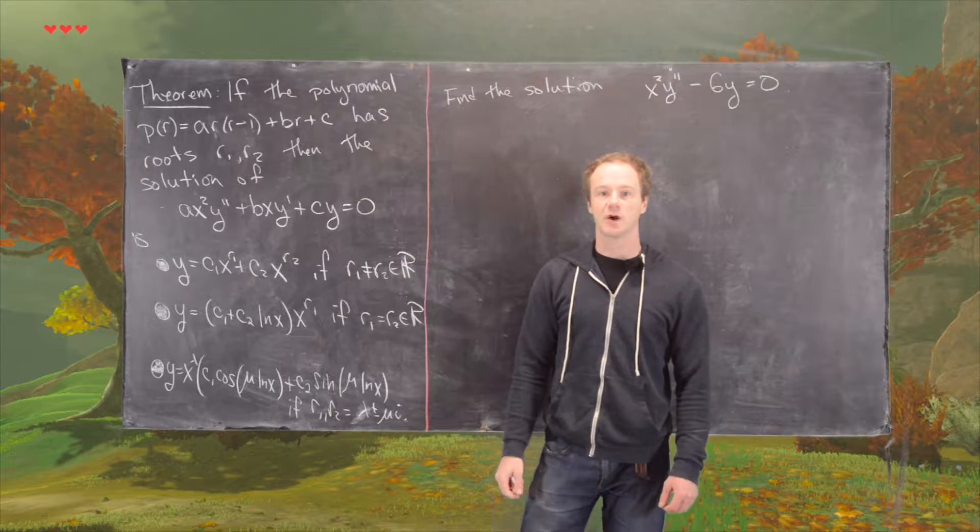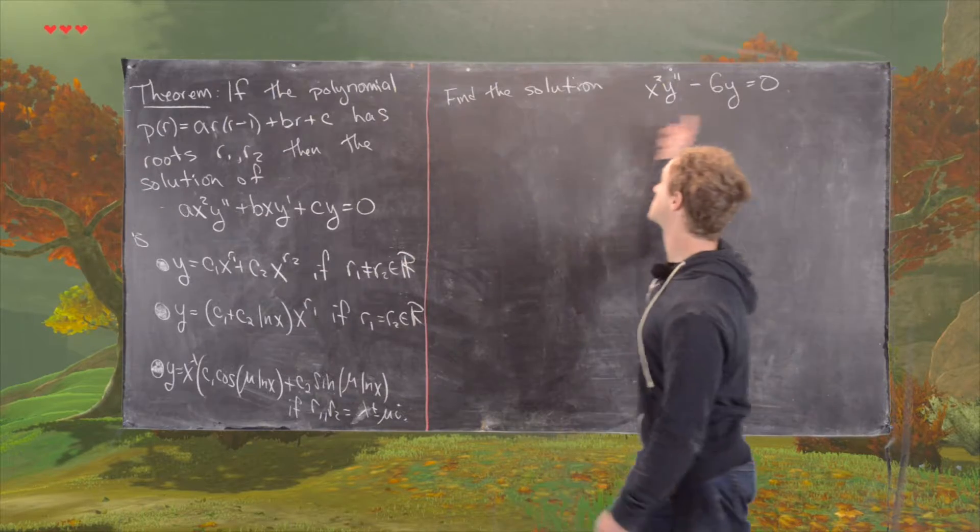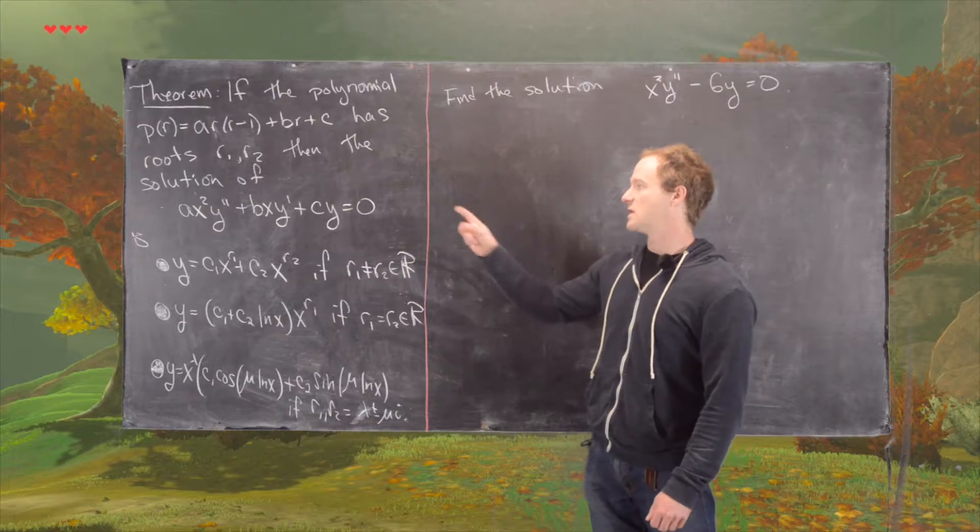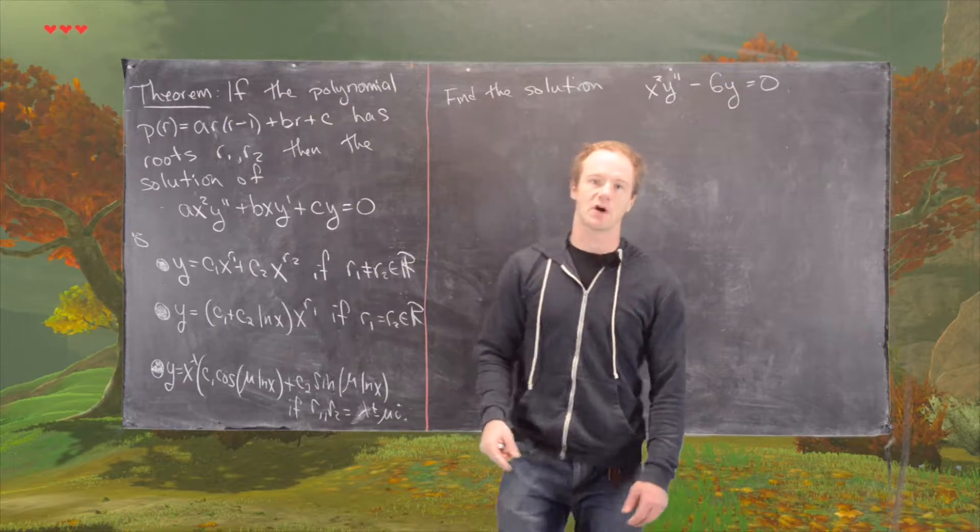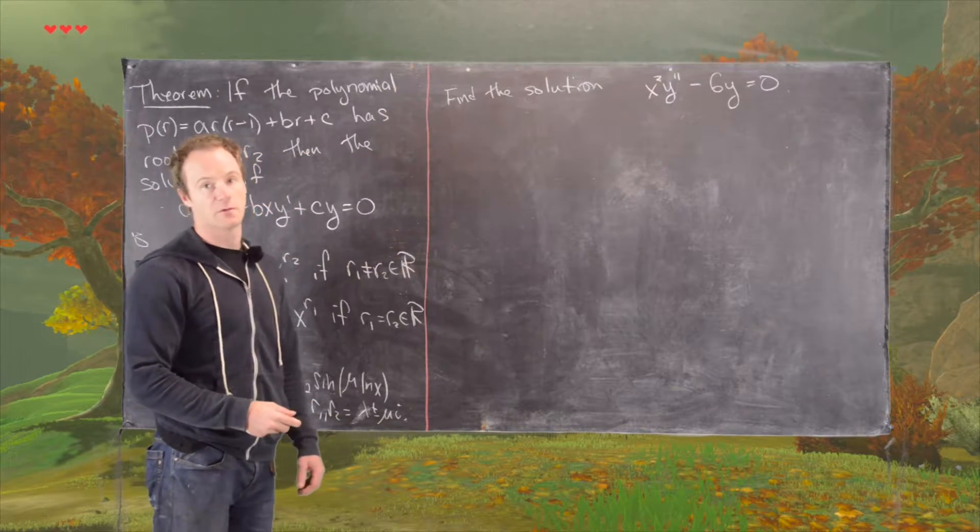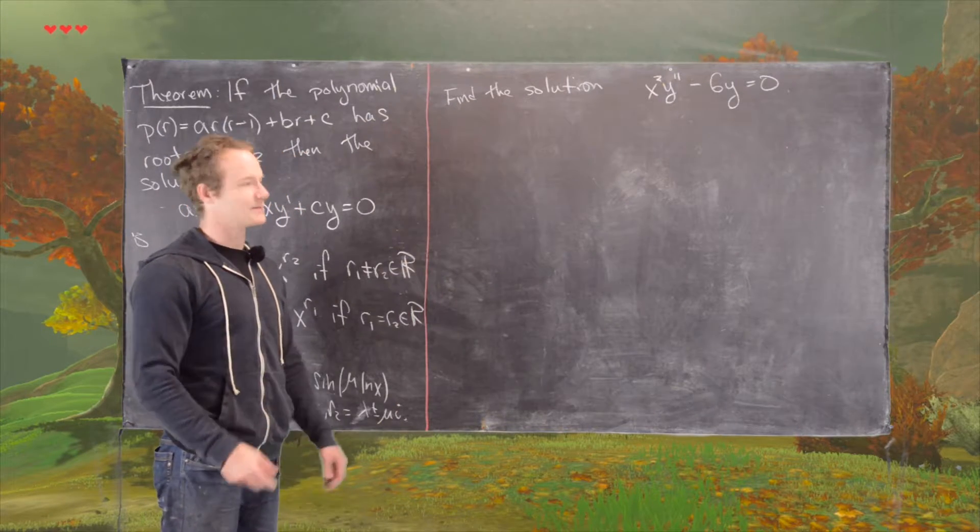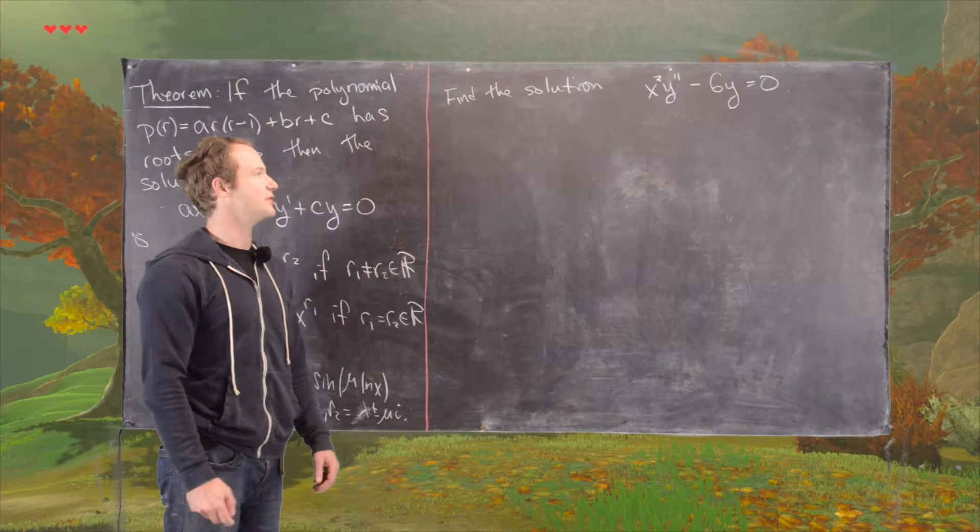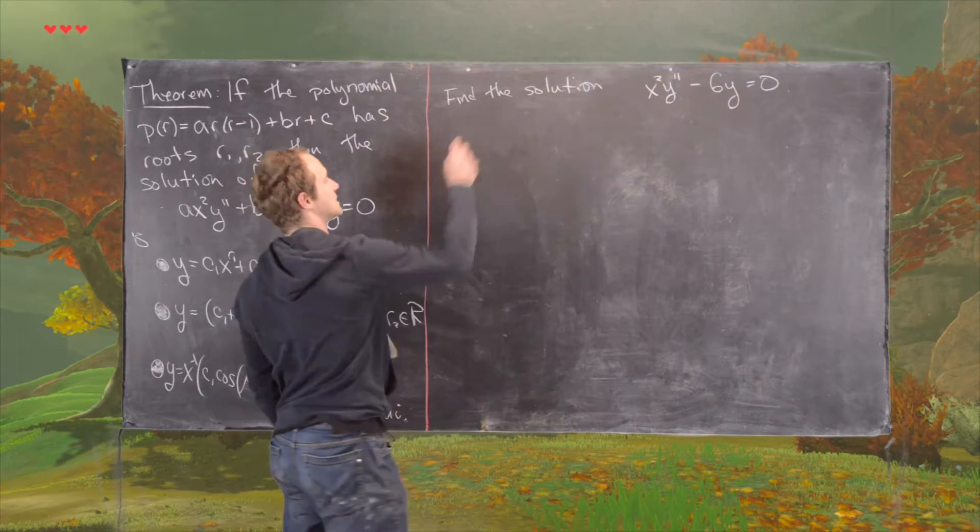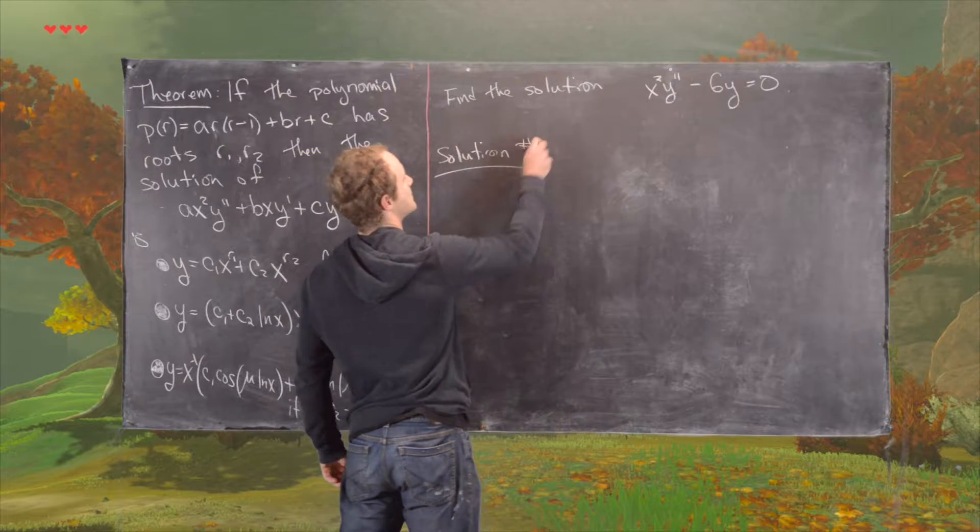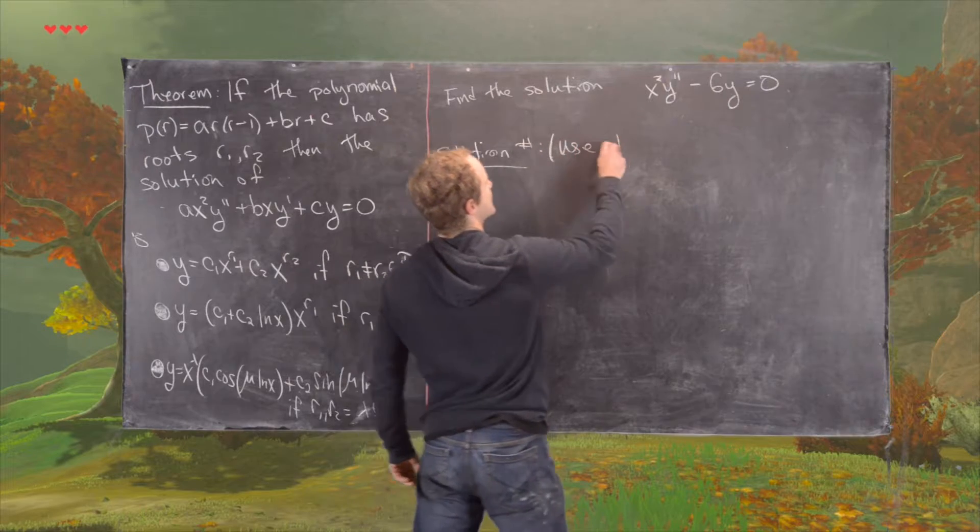In this video we're going to solve this example of an Euler equation. And we're going to do it two different ways by using a result of the theorem. And we're also going to be doing it from scratch by guessing that a solution will be of a certain form. Because sometimes people who are teaching a differential equations class would rather you do it this second way. So let's look at solution number one, and that is use the theorem.